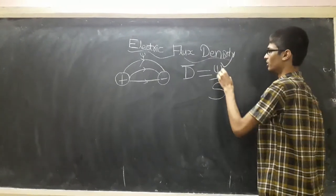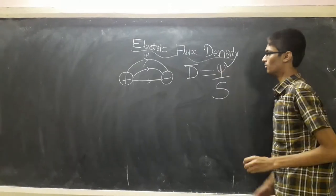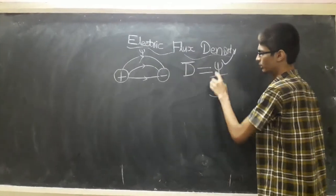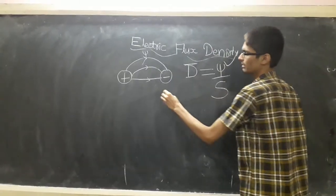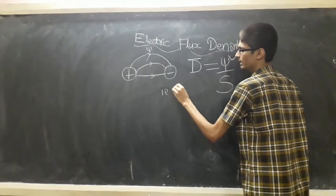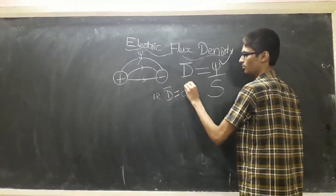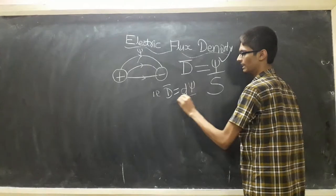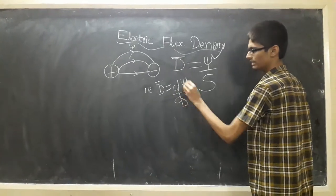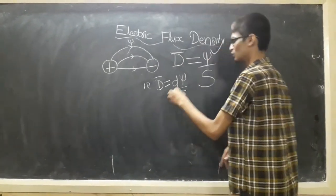Psi equals flux per unit area. Let us look at both sides: D-bar is equal to d-psi by d-s. Let us integrate on both sides.